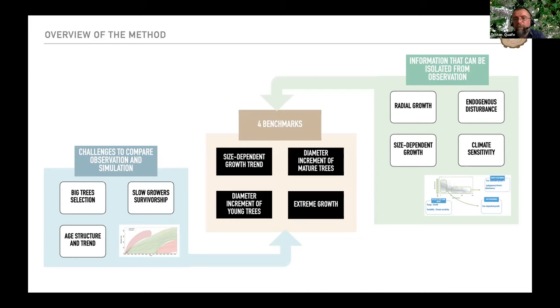Thank you. Considering both challenges and information, and also applying the two solutions mentioned before, four benchmarks were built. We consider four complementary aspects of observation: size-dependent growth trend, tree ring increment of mature trees, ring increment of young trees, and extreme growth. Each benchmark contains two metrics with four aspects, so eight targets have been proposed. I will not present all the technical details of a benchmark today, but you already saw one of them from Virtual Tree. If you're interested, you can check our paper, which is in revision, or you can discuss with me or just ask me.